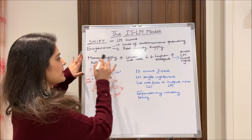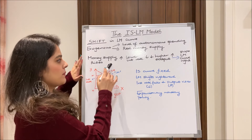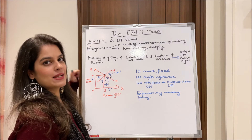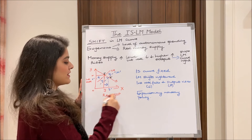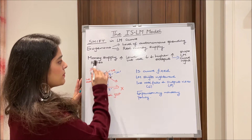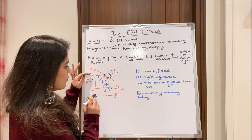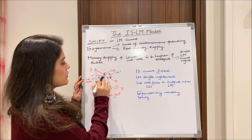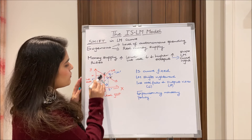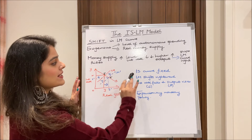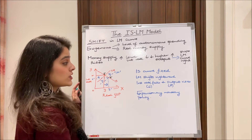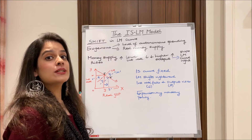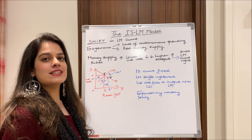For the shift in the LM curve, the exogenous factor is the real money supply. When money supply rises — regulated by the RBI — the interest rate tends to fall and output tends to rise, leading to a rightward shift in the LM curve. Diagrammatically, interest rate is on the y-axis and real GDP on the x-axis. As money supply increases, interest rate falls from r to r-dash, and real GDP rises from y to y-dash. The equilibrium shifts from E to E-dash. Here the IS curve is fixed while LM shifts rightward, with interest rate falling and output rising — this is the case of an expansionary monetary policy.